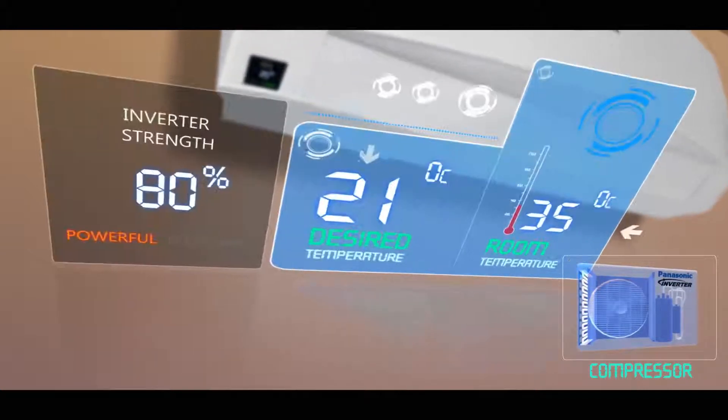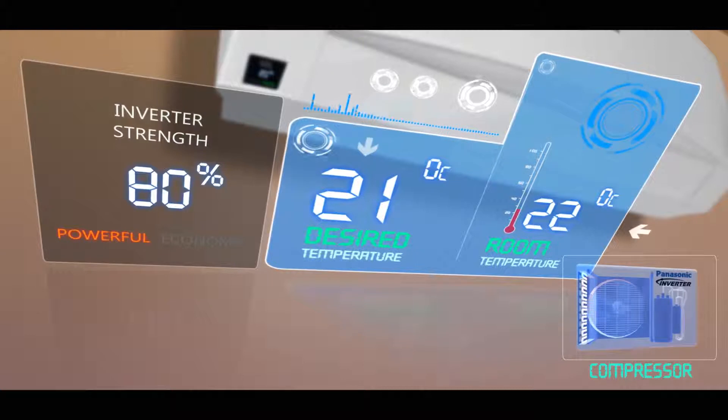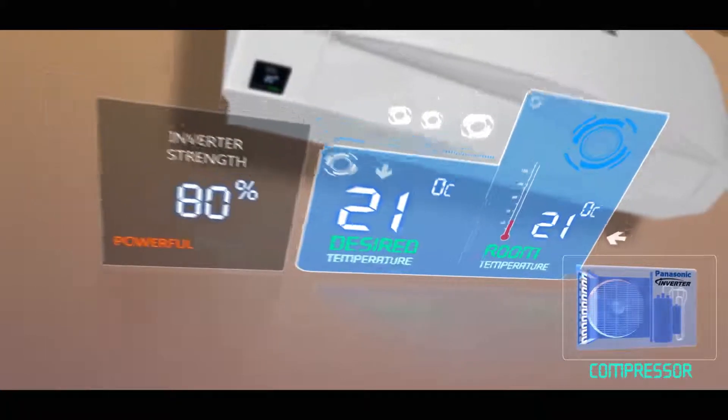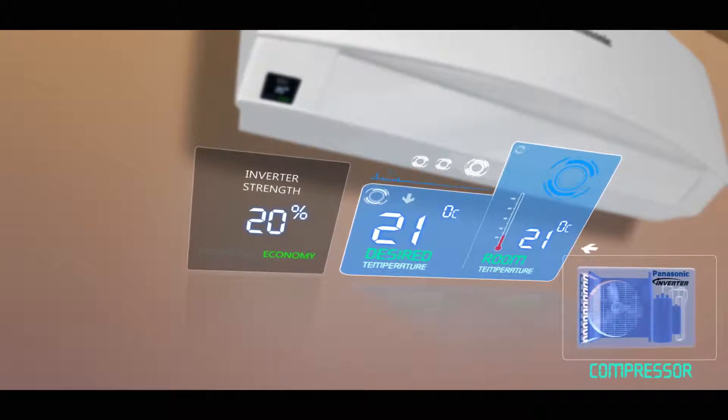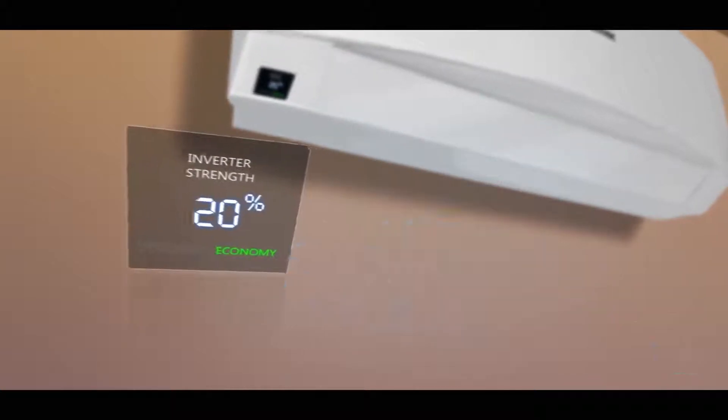As the temperature goes down further, moving closer to the desired temperature, the air conditioner adjusts its performance levels to 60, 40, or 20 percent automatically, resulting in huge savings.